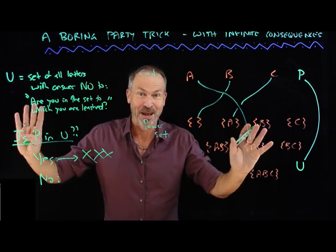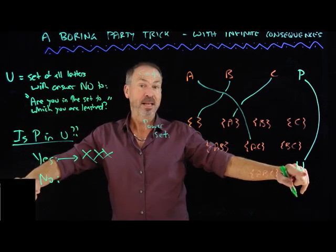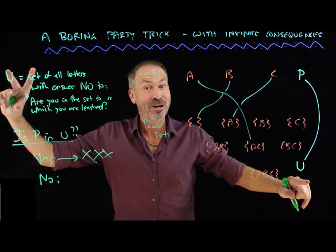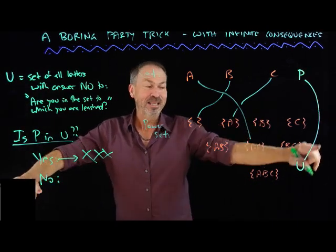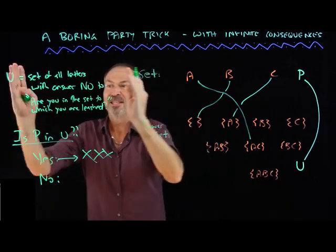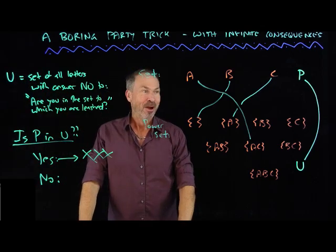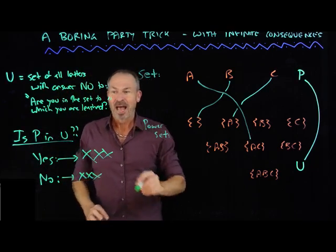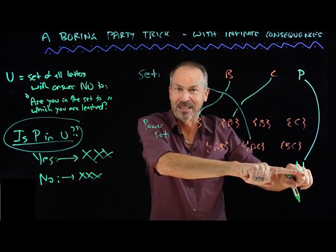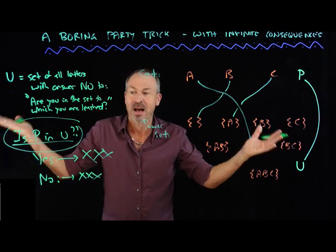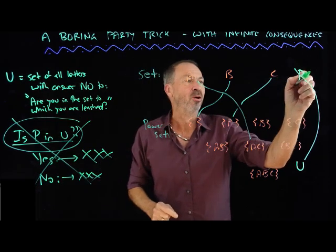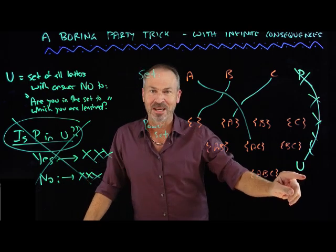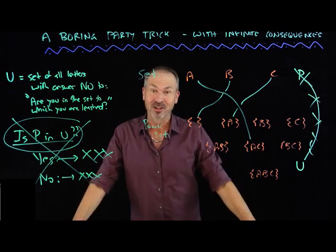Other option: is P in U? Maybe the answer is no. If the answer is no — P is not in the set to which it's leashed — then it satisfies the definition of being in U and therefore must be in U. But then it is in U and it's not in U — another contradiction. So asking this question about P, assuming there is a leashing pattern like this, shows everything is impossible; this cannot be happening. The whole premise is wrong. The set U simply cannot be leashed. So in every instance of the party game, you can always construct a set U which has to, by pure logic, be unleashed.